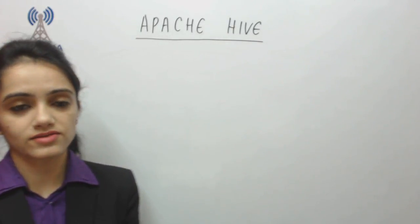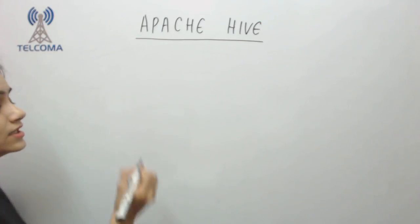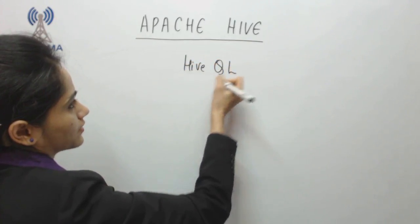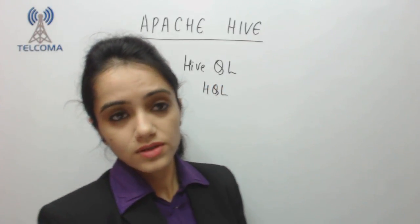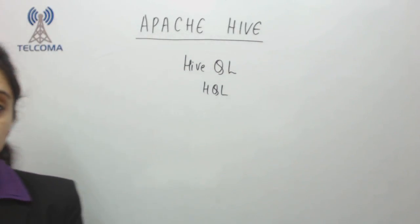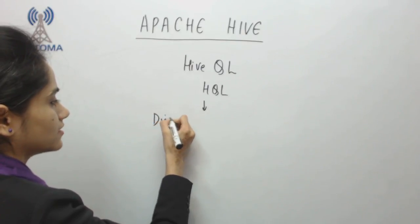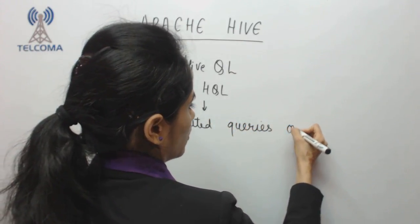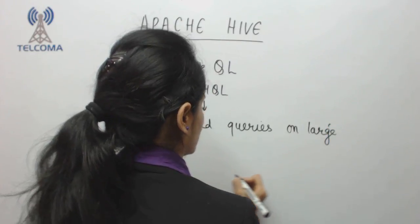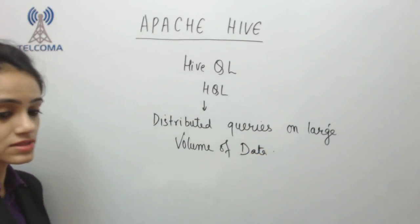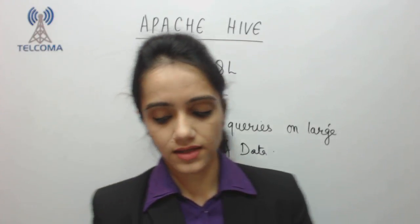Hive provides SQL-like, structured query language declarative language called HiveQL, or HQL. This HQL language allows us to run distributed queries on a large volume of data.